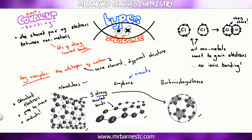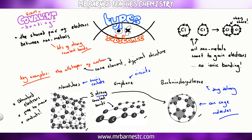Nanotubes are really, really strong and therefore they're used in tennis rackets — strong because of the lots of strong covalent bonds. Buckminsterfullerene looks like a football, and it can cage different drugs, so it's used in drug delivery systems.